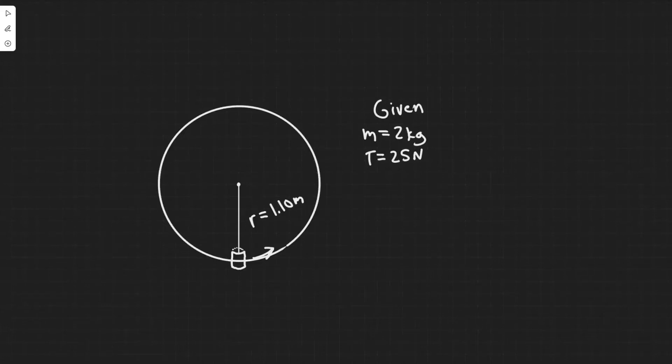Okay, so in this problem we're told that a bucket of mass 2 kilograms is whirled in a vertical circle of radius 1.1 meters. At the lowest point of its motion, the tension in the rope supporting the bucket is 25 newtons. Part A, find the speed of the bucket, and B, how fast must the bucket move at the top of the circle so the rope does not go slack?